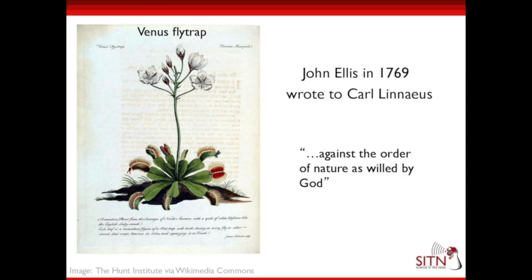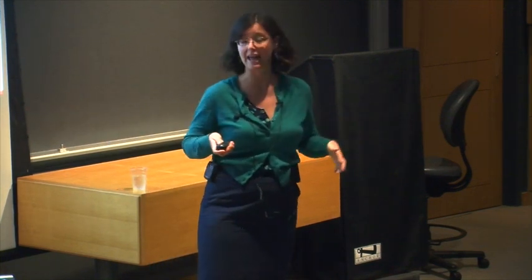Coming back to the Venus flytrap — when scientists first figured out that plants could be carnivorous, this was the first one they found. In 1769, John Ellis, a botanist studying these plants, sent a letter to Carl Linnaeus, who was a very famous scientist. Linnaeus is the one who developed our binomial nomenclature — the way we name species today — and he named many, many of the species we know.